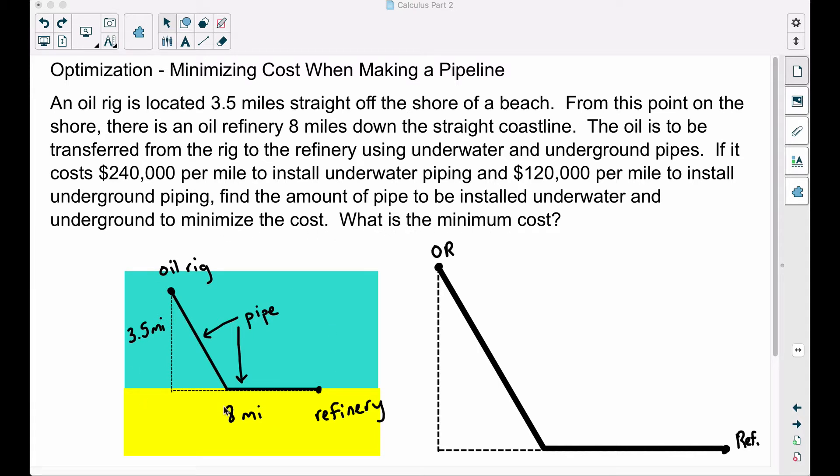Here's a picture to illustrate that. We have the oil rig three and a half miles off the shore, and then from that point there to the refinery is eight miles. Now it costs more money to install pipe underwater. So one would think, if we just want to go from the oil rig to the refinery, let's just build a pipe straight from here to here. But it costs more money to do that, even though that's the shortest distance.